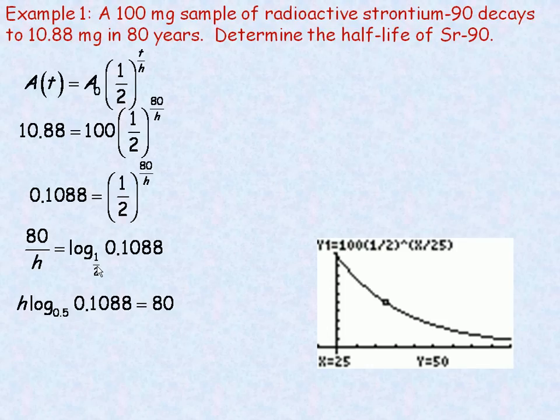And notice I've changed the base. I haven't really changed it. I just changed the form. Instead of writing one-half, I'm writing 0.5 because that's what I'll use in my calculator. Now, in order to find h, this logarithm is just multiplied by the h. So I would divide both sides by that logarithm. So h is 80 over that logarithm.